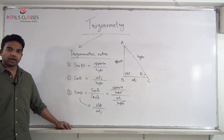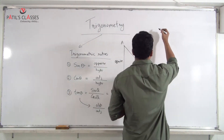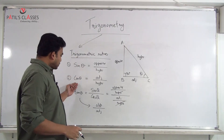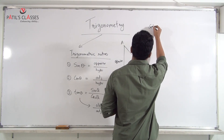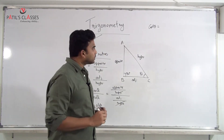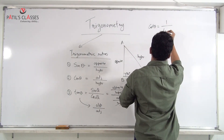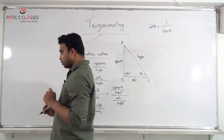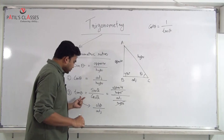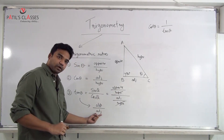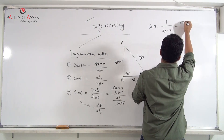After sin θ, cos θ, tan θ, the next ratio is cot θ. Cot θ = 1/tan θ. Since tan θ = opposite/adjacent, cot θ, being its reciprocal, equals adjacent upon opposite.